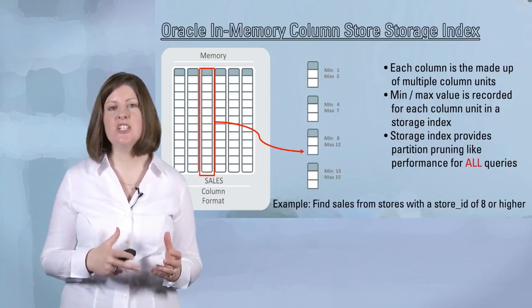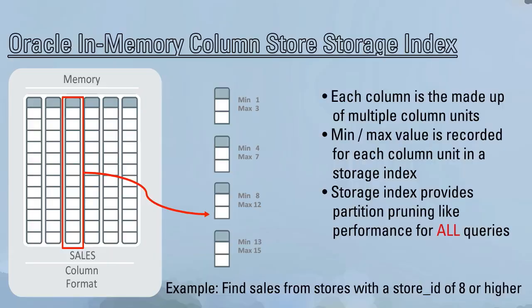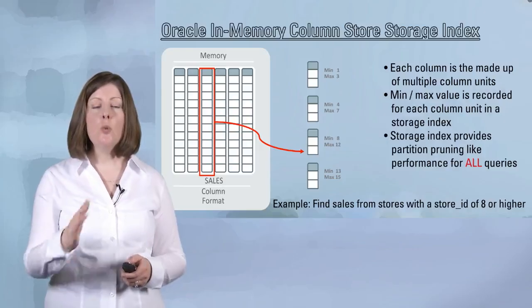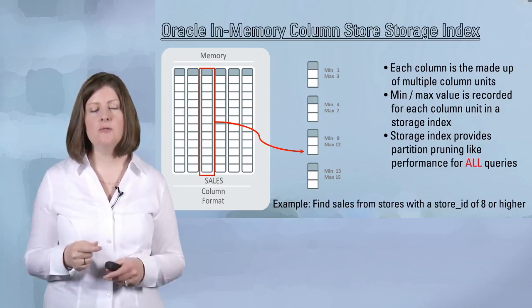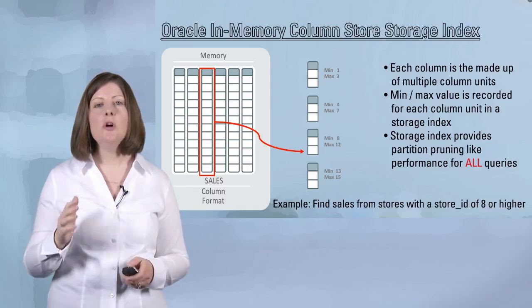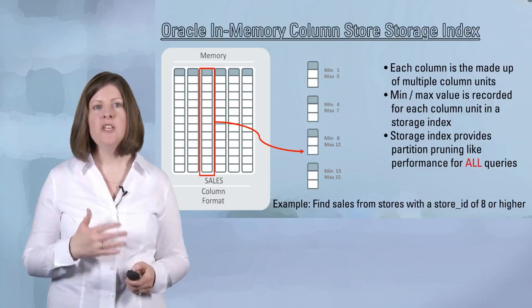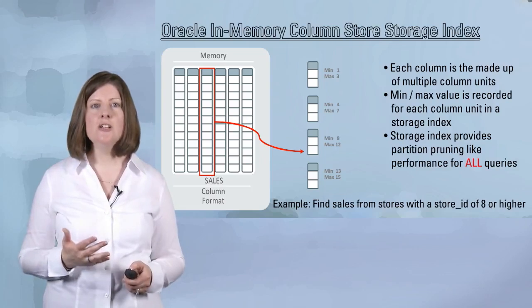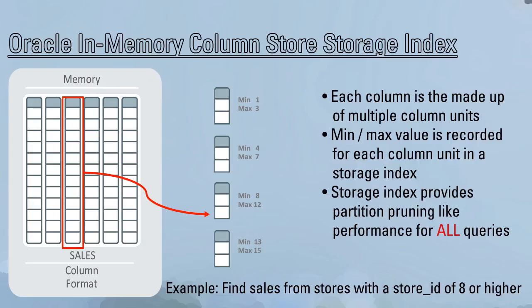There are some other advantages to scanning data in the column store as well. Each of the columns in the in-memory column store actually has something called a storage index created on it. That storage index keeps track of the min-max values for each of the extents or IMCUs within that column. We're able to use that storage index to provide data pruning or data elimination as part of the scan. So we'll check the value we're looking for against that min-max range for each IMCU in that column, and we will only scan the IMCUs where we find a match. If I'm looking for store IDs where the store ID is 8 or higher, and the first IMCU has no store IDs that are 8 or higher, I skip it entirely.